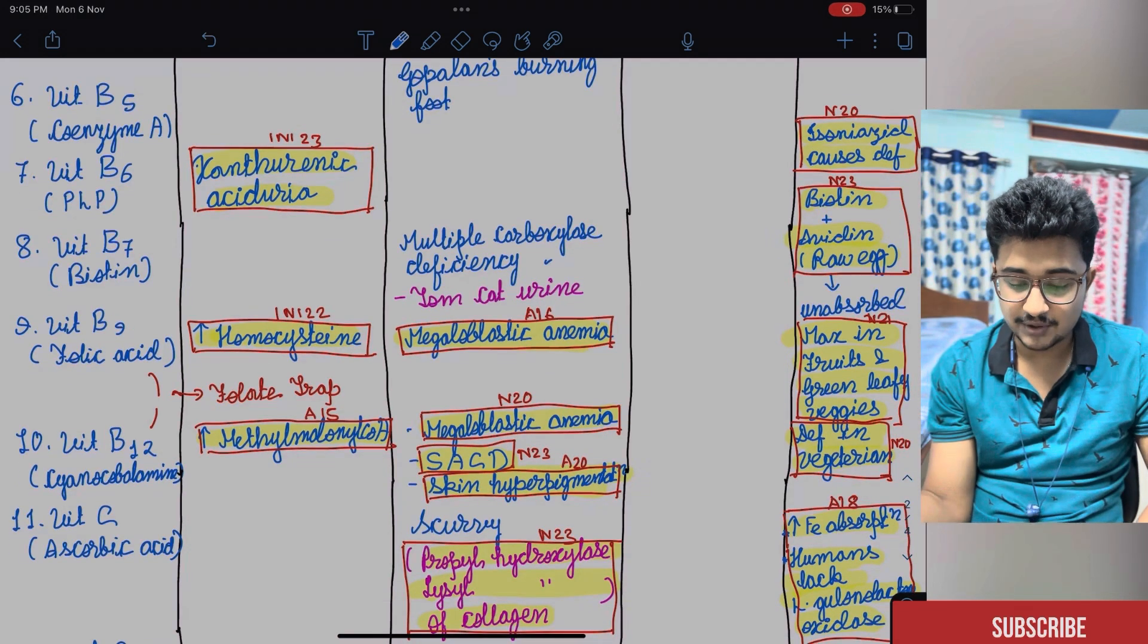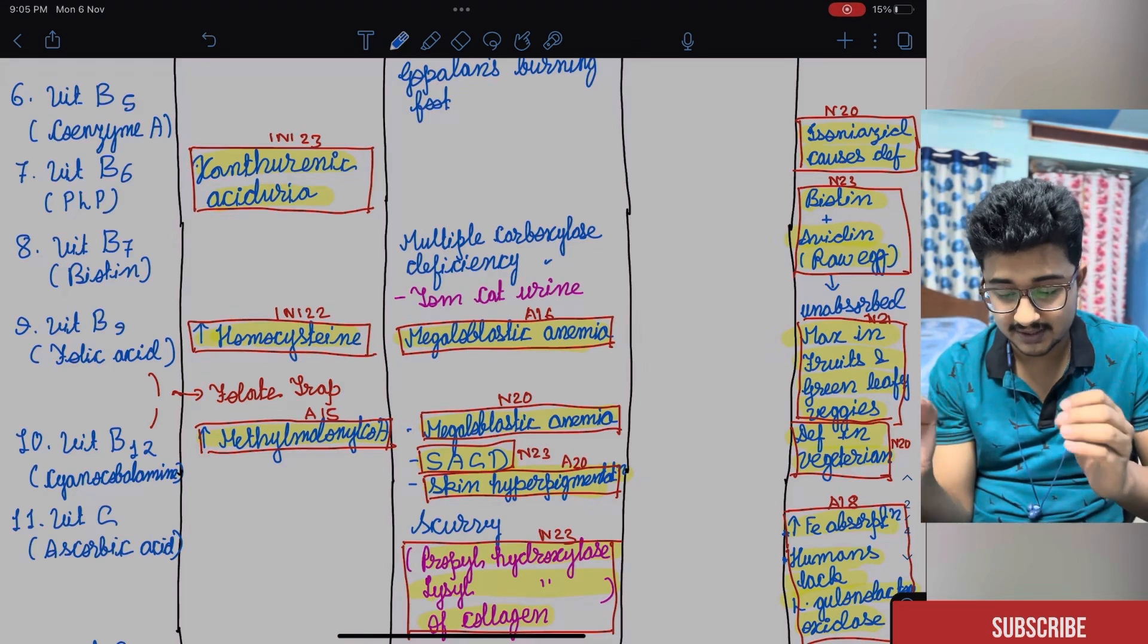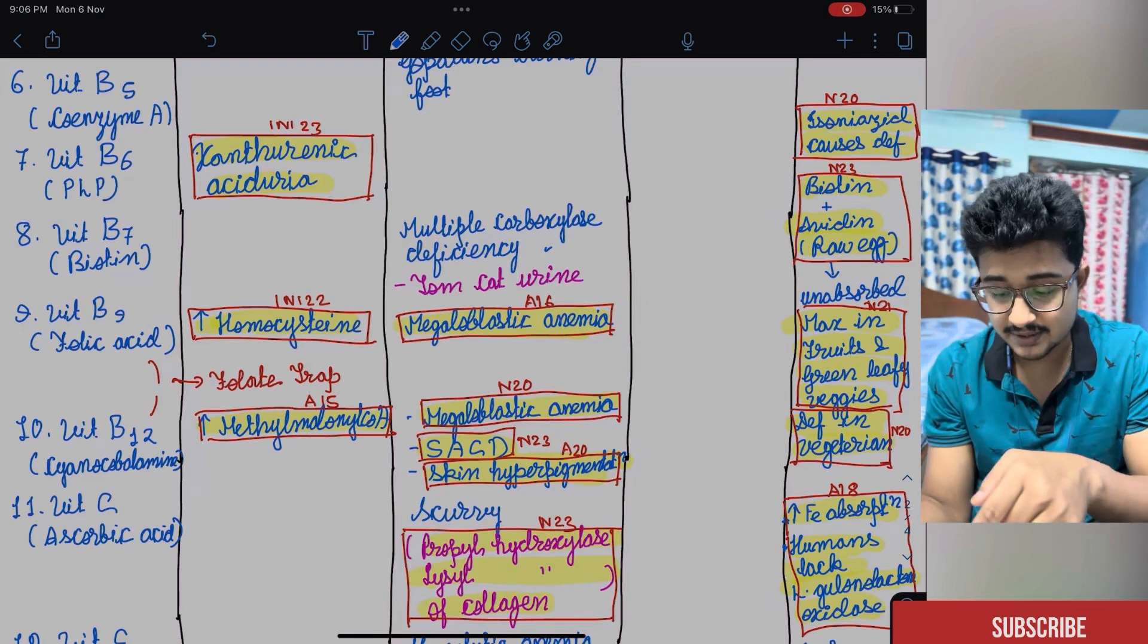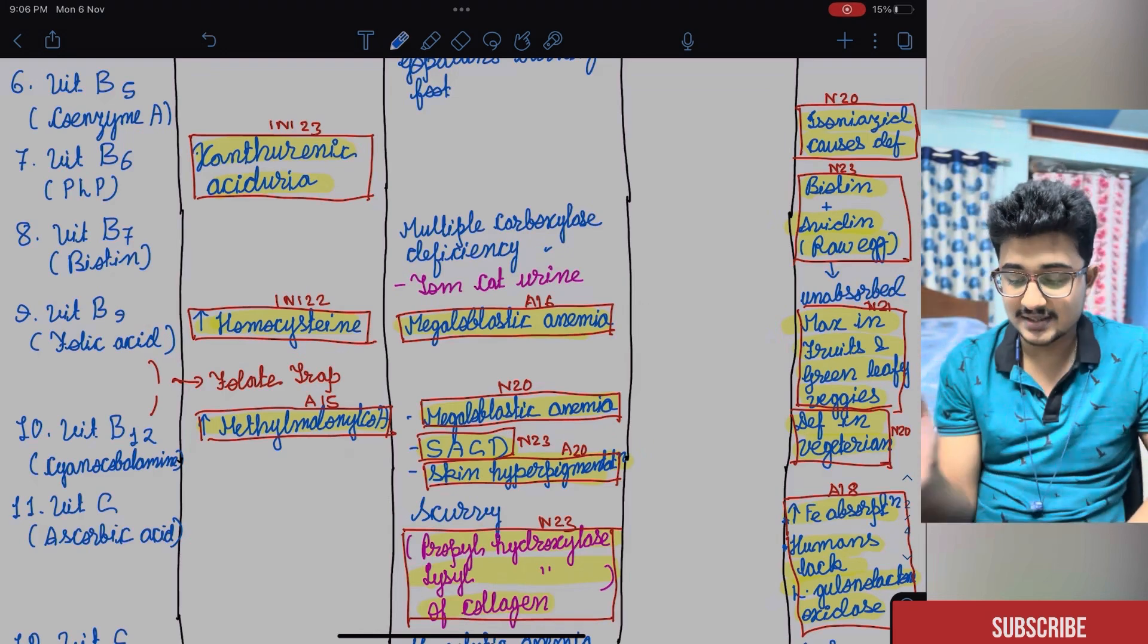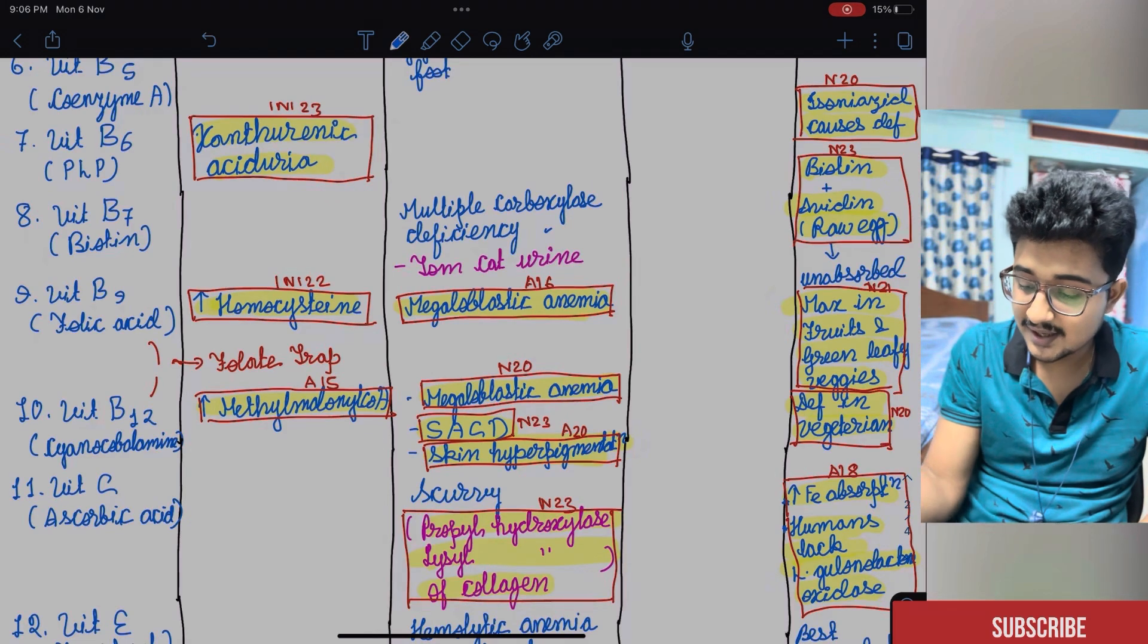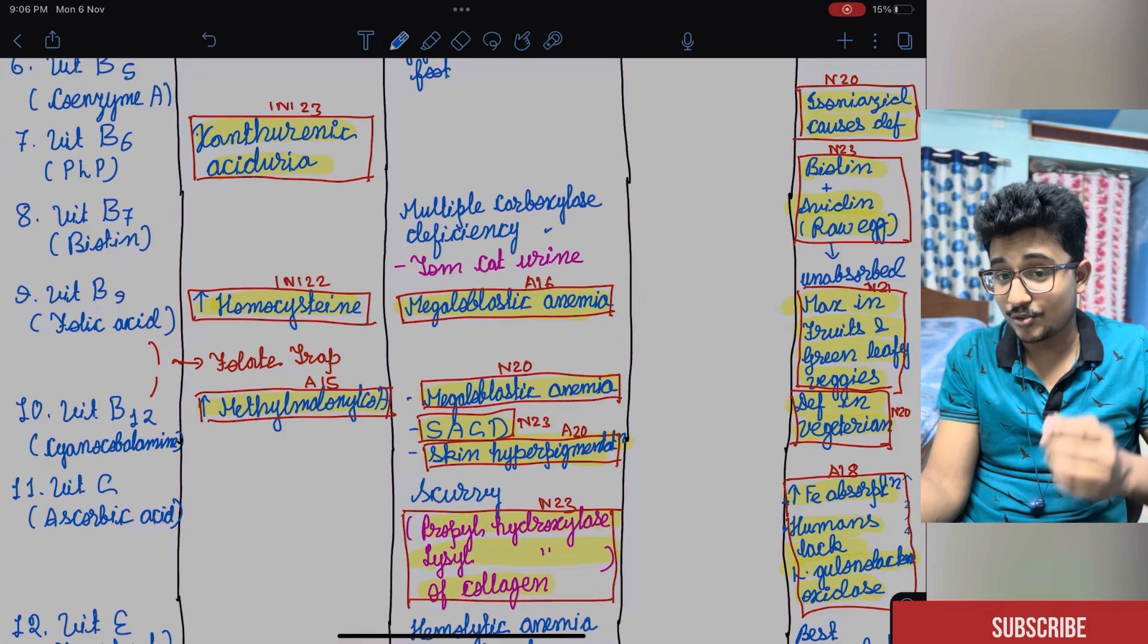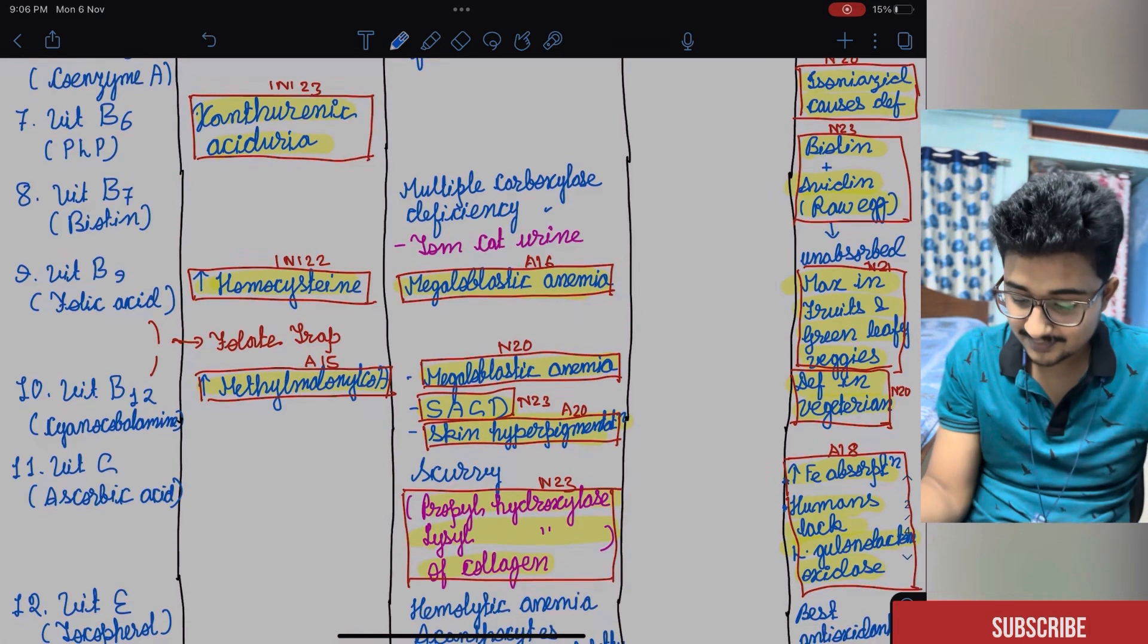And in vitamin B9, that is the folic acid, you have to remember the folate trap. You have to remember the diagram of the folate trap. The homocysteine level is elevated. INICT 2022. Megaloblastic anemia, everyone knows that. Maximum in fruits and green vegetables and its counterpart vitamin B12 that also has megaloblastic anemia that is more in the non-vegetarian diet. Deficient in vegetarians.